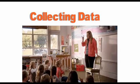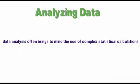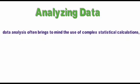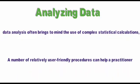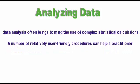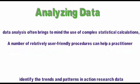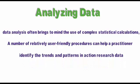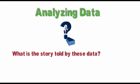Step 5: Analyzing Data. Although data analysis often brings to mind the use of complex statistical calculations, this is rarely the case for the action researcher. A number of relatively user-friendly procedures can help practitioners identify trends and patterns in action research data. During this portion of the seven-step process, teacher researchers will methodically sort, sift, rank, and examine their data to answer two generic questions.